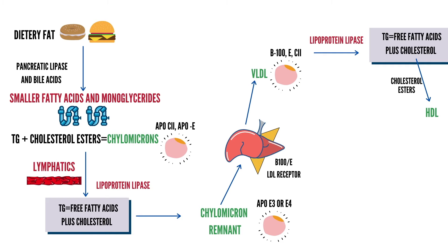After removal of the majority of triglyceride content, VLDL remnants — also known as intermediate density lipoproteins — are formed. These can be taken up by the liver after binding to ApoB100E receptors and then degraded. A group of IDLs escapes this hepatic uptake and is stripped of remaining core triglycerides by extracellular hepatic lipases, becoming LDL. LDL contains predominantly cholesterol esters in its central core and expresses B100 apoproteins on its surface.